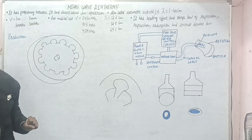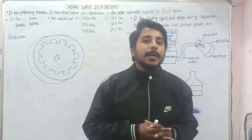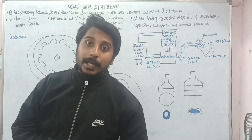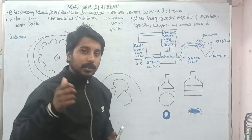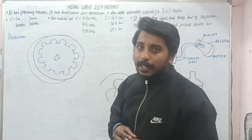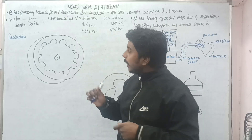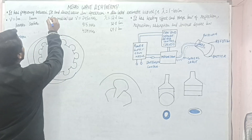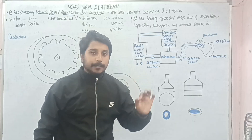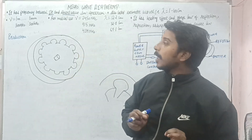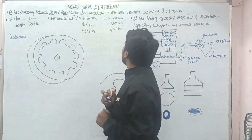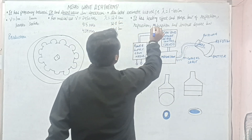What is Microwave Diathermy? Shortwave Diathermy we have previously discussed — it was also a deep heating modality under high frequency current. Microwave Diathermy is similarly a deep heating modality under high frequency current. Its frequency lies between infrared and shortwave in the electromagnetic spectrum. It is also called the decimeter wave.